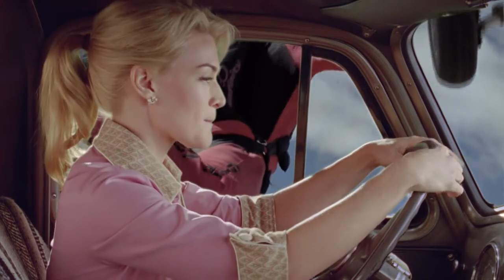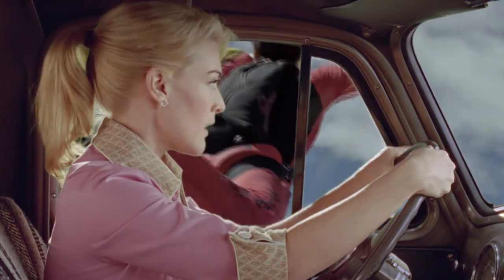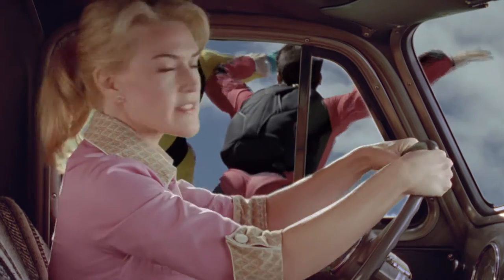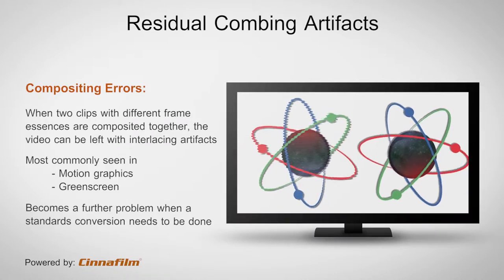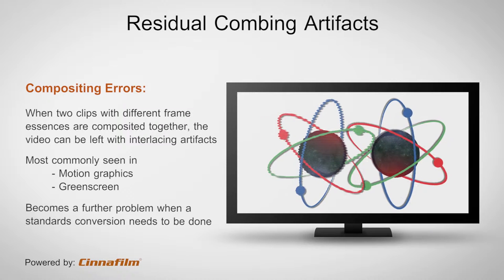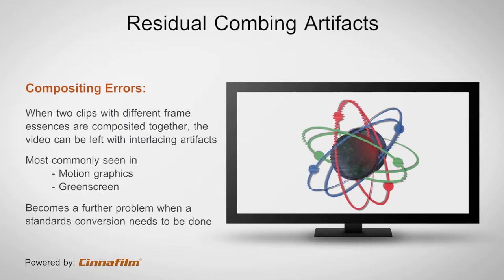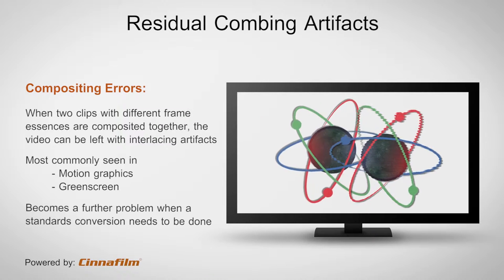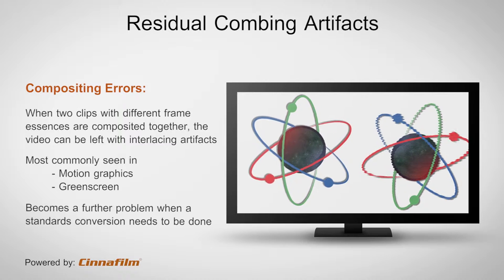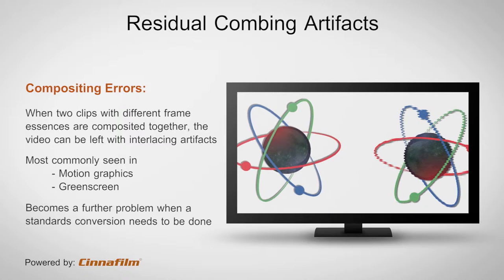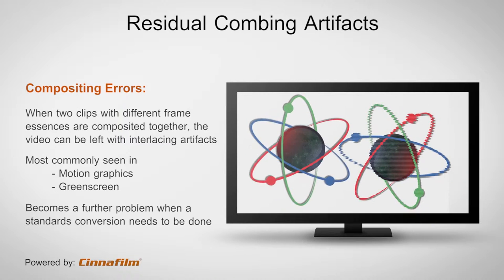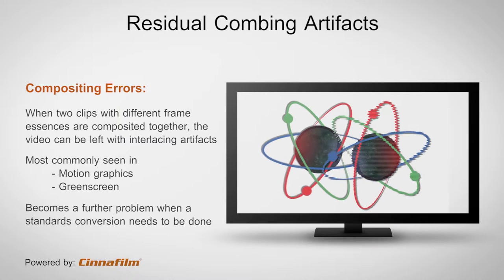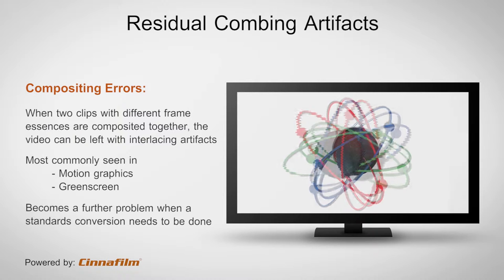In this video we will cover the problems associated with compositing two sources with different frame essences. Doing so can lead to interlacing artefacts. This problem becomes worse when trying to do an inverse telecine or standards conversion. Green screen and motion graphics are the most obvious places where you'll see a problem like this.